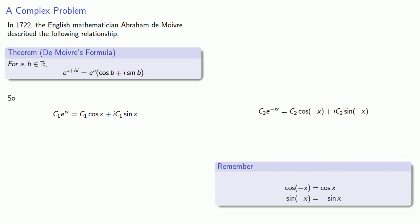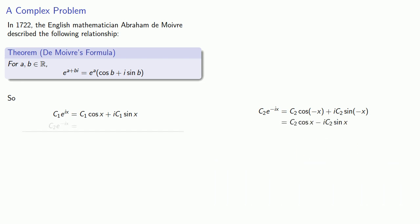But remember, cosine of minus x is just cosine of x, and sine of minus x is minus sine of x. And so our second solution, c₂*e^(-ix), is going to be c₂*cos(x) - i*c₂*sin(x).